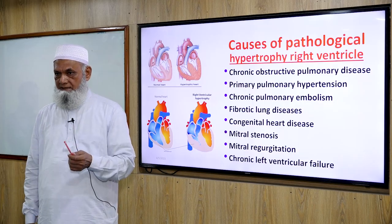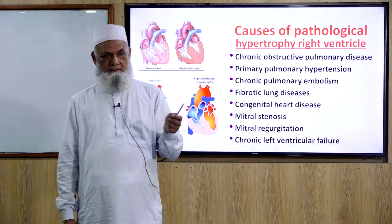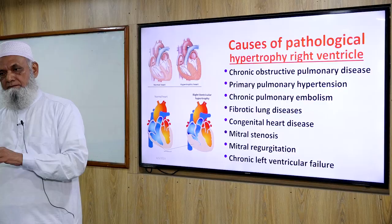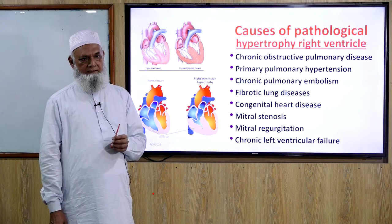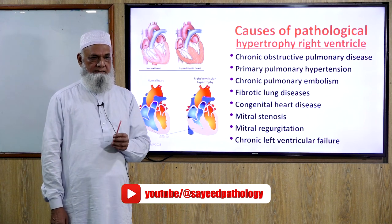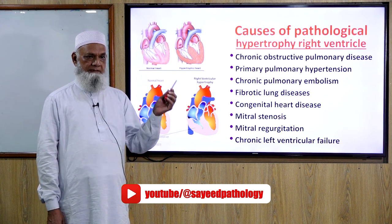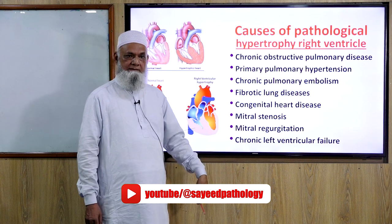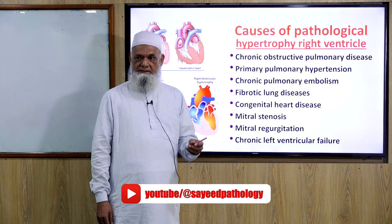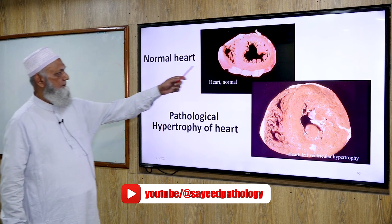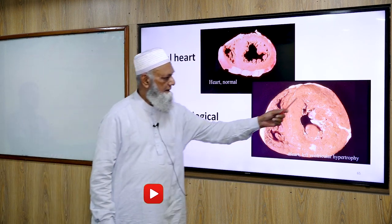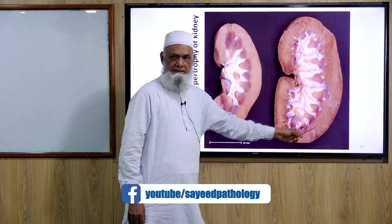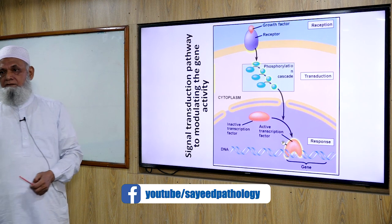In pulmonary stenosis, blood does not enter fully to the left ventricle and backflows into the pulmonary circulation. This is a normal heart compared to a hypertrophied heart. Compensatory hypertrophy of the kidney occurs when one kidney is damaged and the other becomes hypertrophied.